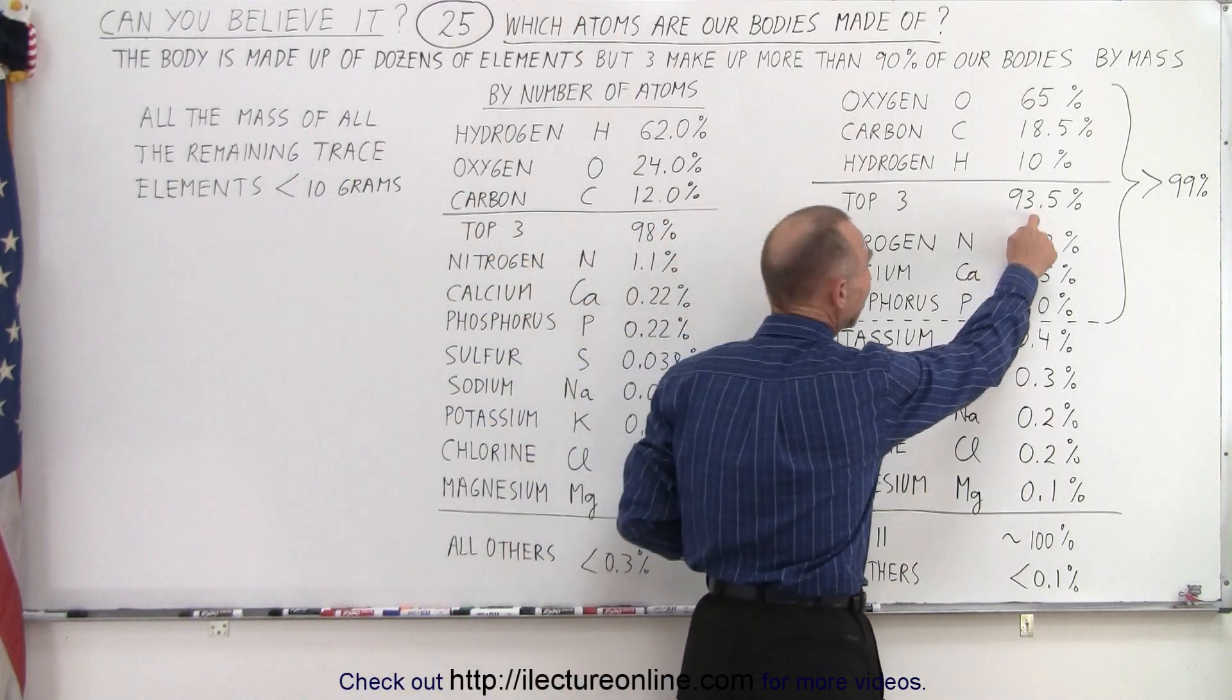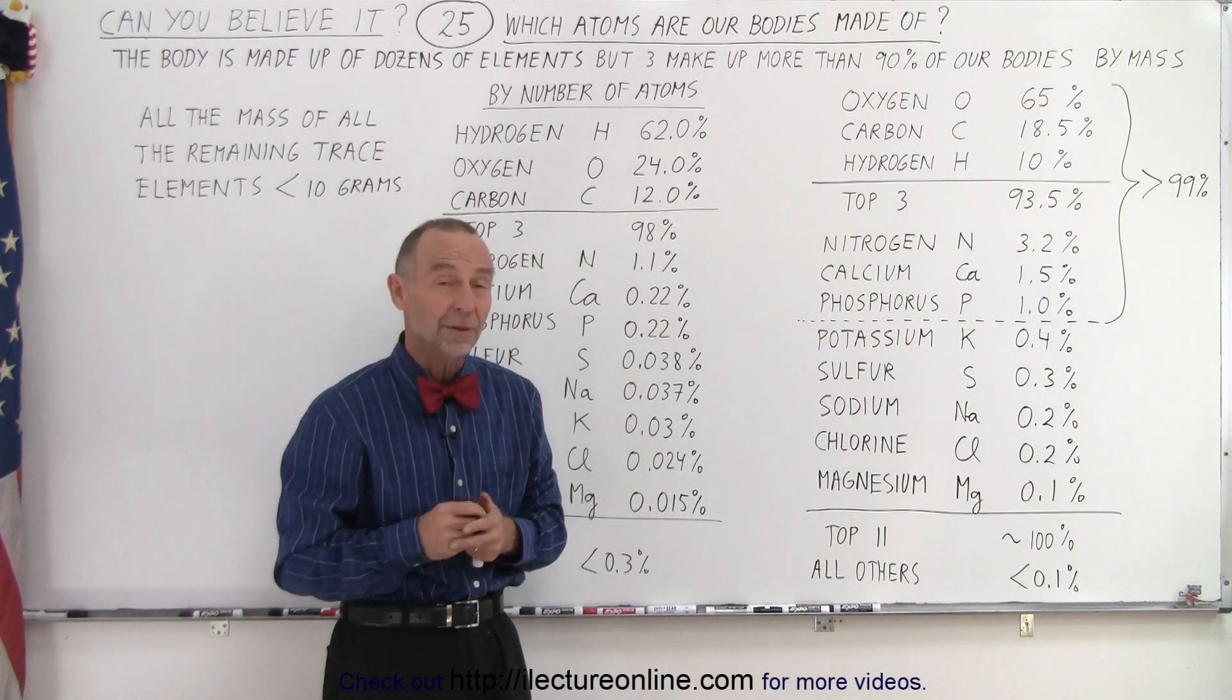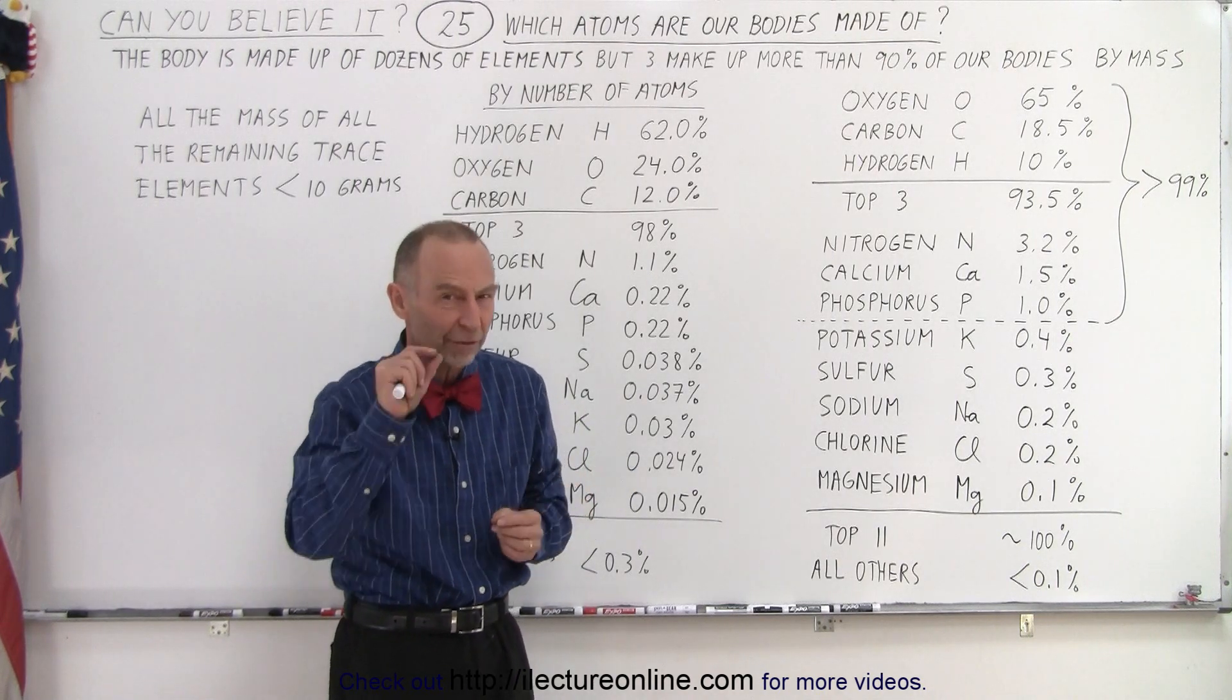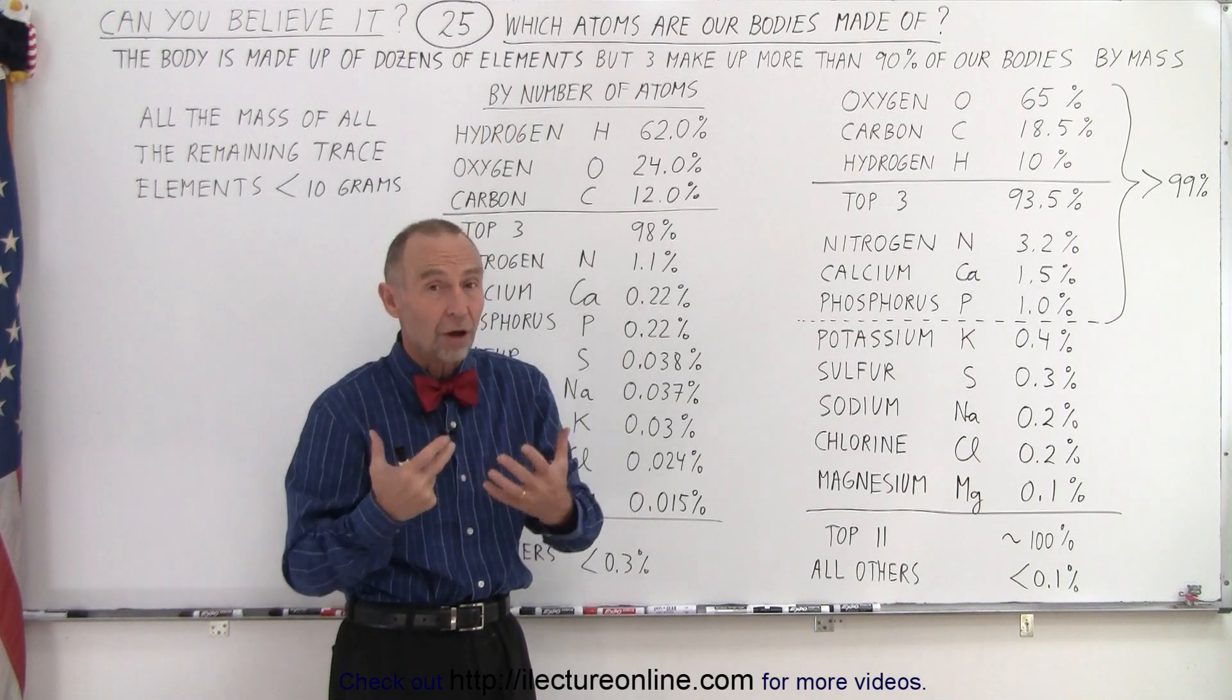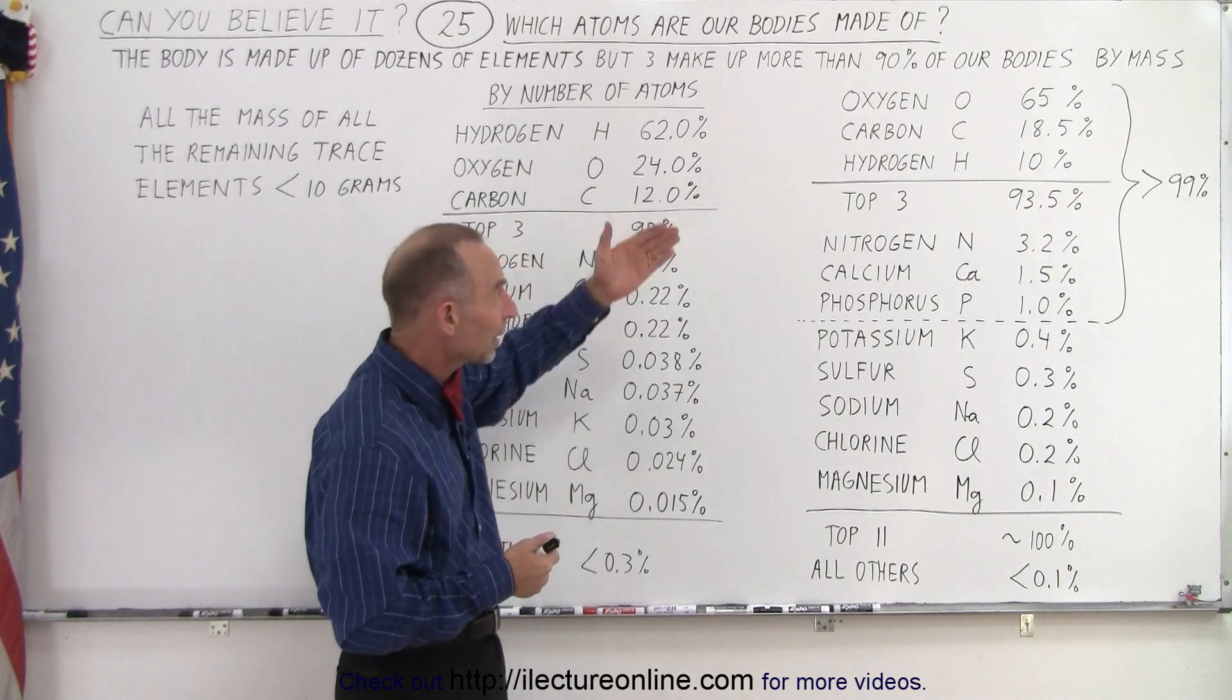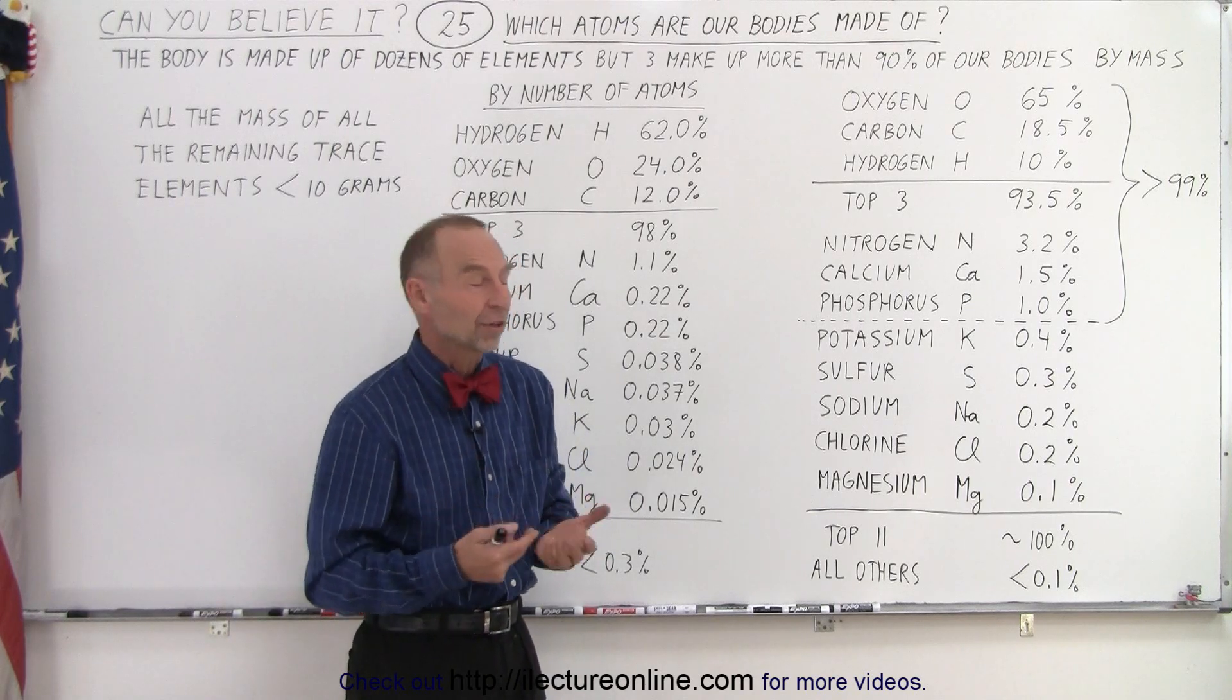Now together, that's 93.5% of our bodies are made up of just those three elements, which is actually phenomenal when you think of it. Now of course, our bodies are made up of many other elements as well in very small quantities. As a matter of fact, without those other elements, we wouldn't be able to live. They're absolutely essential for life. And so we found that the top 11 elements that make up our body are absolutely essential.